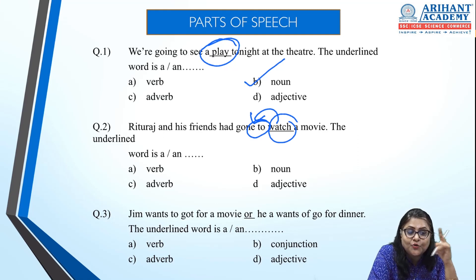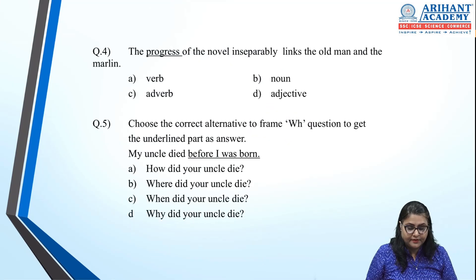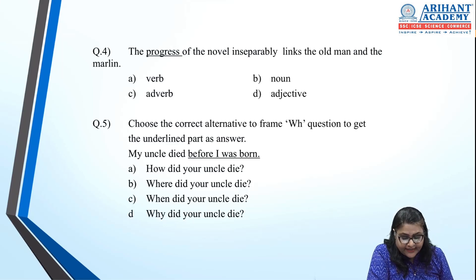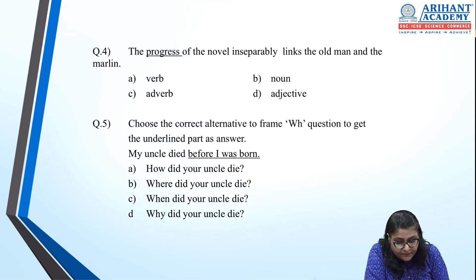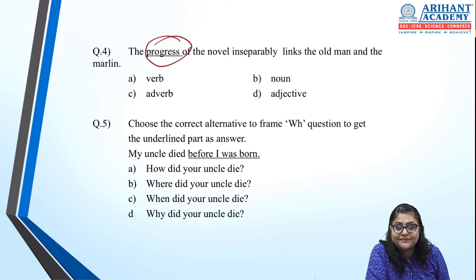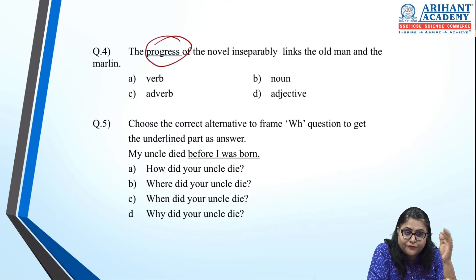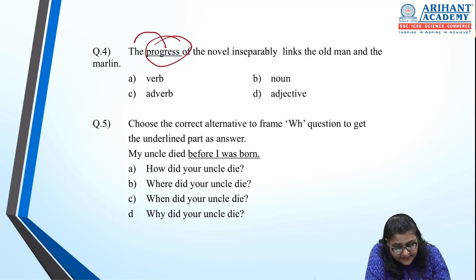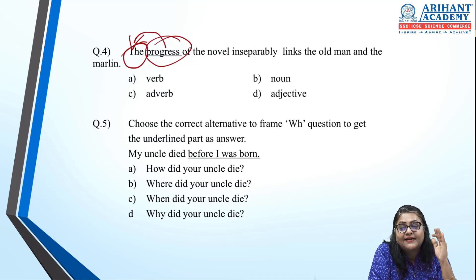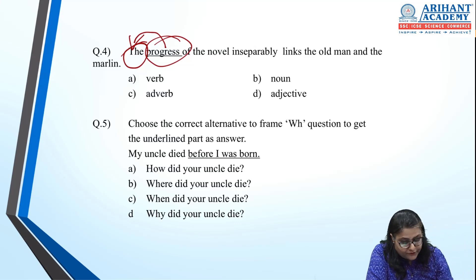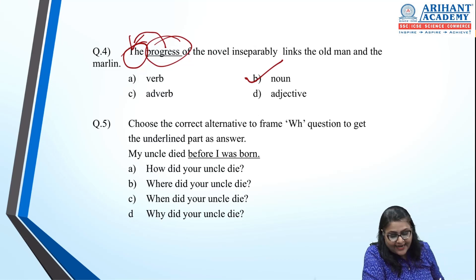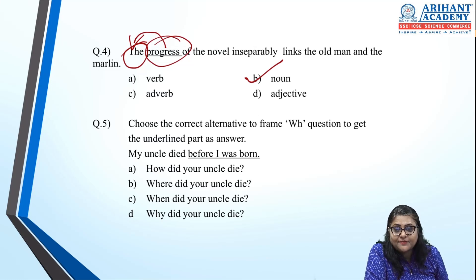Next: 'The progress of normal inseparably links the old man and the marlin.' The word 'progress' is preceded by the article 'the' — articles are used before nouns — so 'progress' is a noun. Option B is correct.